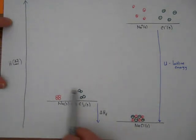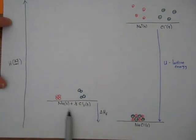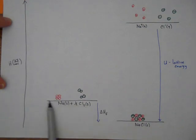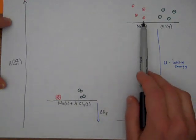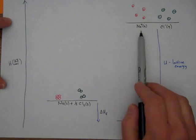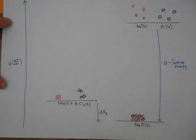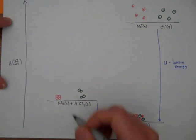Let's start here. We've got our sodium solid plus a half mole of Cl₂. Ultimately, I want to convert these into sodium cations and chloride anions. So we want to think about the processes we need to do to make that happen.